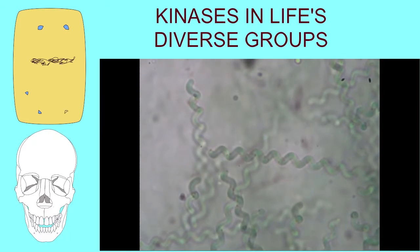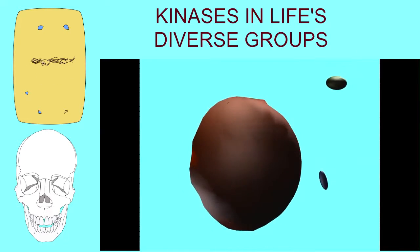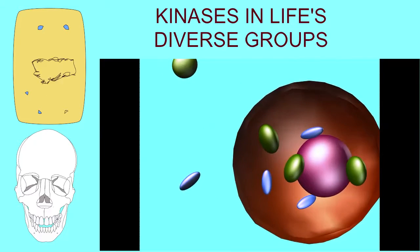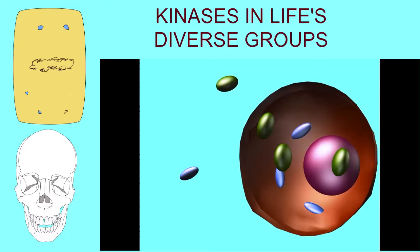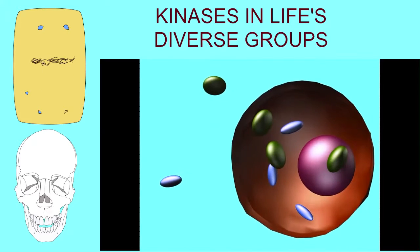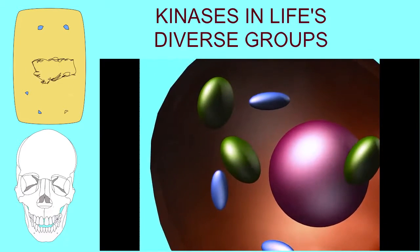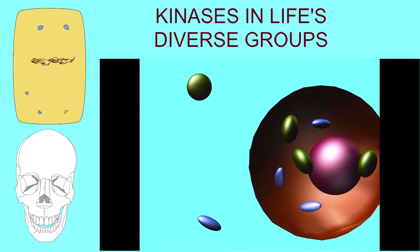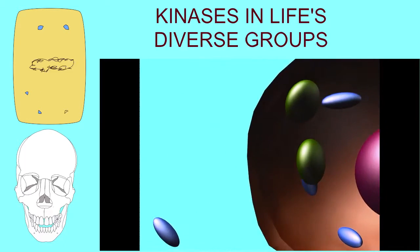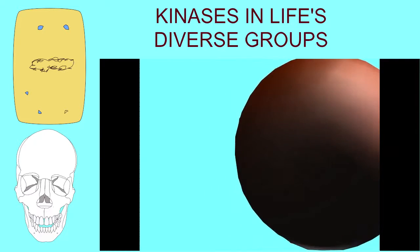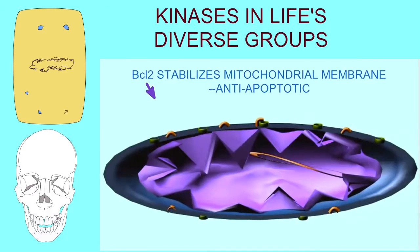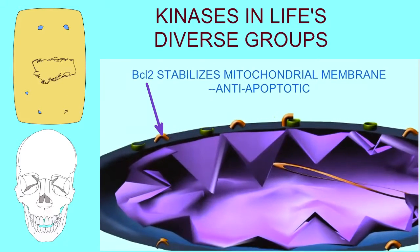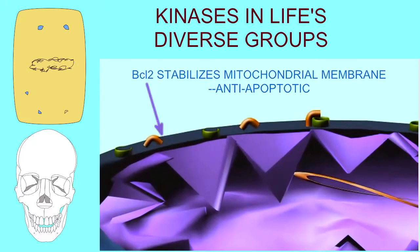It certainly seems that the mitochondria in eukaryotic cells are the descendants of bacteria which lived endosymbiotically in the first eukaryotes. So perhaps it isn't surprising that bacteria have many homologues of apoptotic proteins, given that the descendants of bacteria — the mitochondria — are so essential in apoptotic mechanisms.